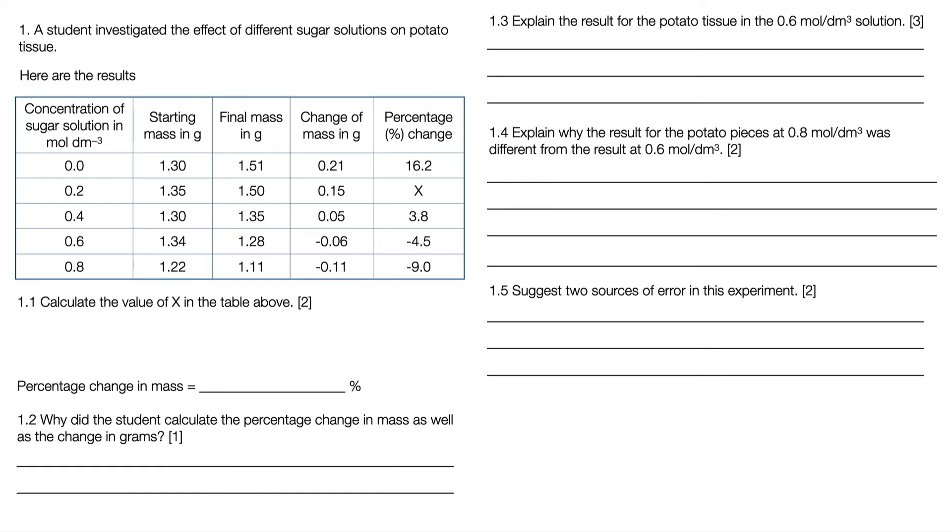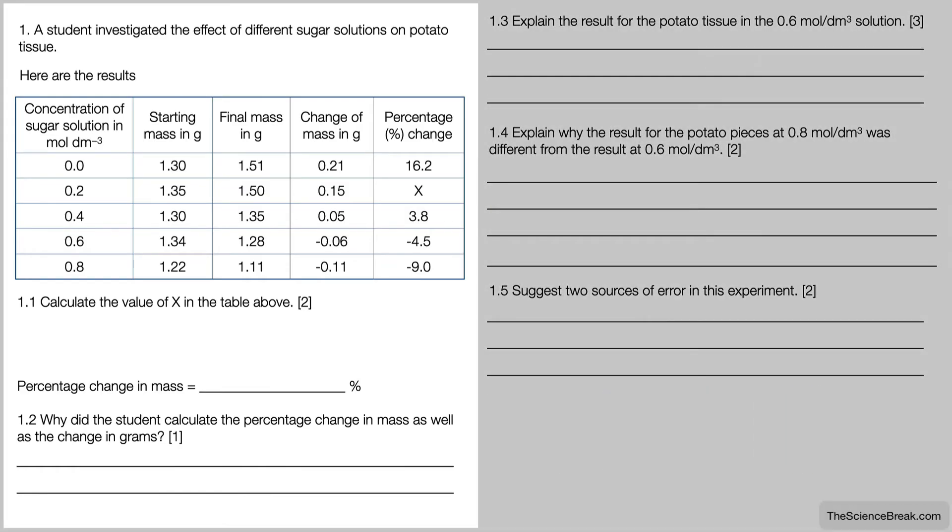Here are some exam questions. It might be worth pausing here to go through the questions and then we'll go through the answers in a moment. For question one, a student investigated the effect of different sugar solutions on potato tissue. Here are the results in the form of a table. Question 1.1 says calculate the value of x in the table above. Value x is the percentage change for the 0.2 mol/dm³ concentration, and we would do that in the way we practiced a moment ago.